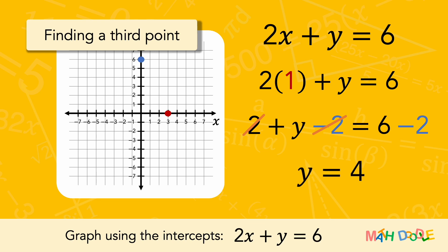So, when x is 1, y is 4. This tells us that the line of the equation passes through the point (1, 4).